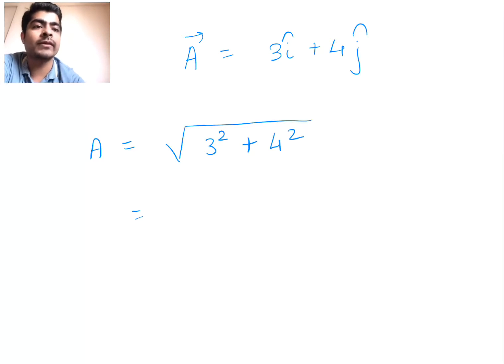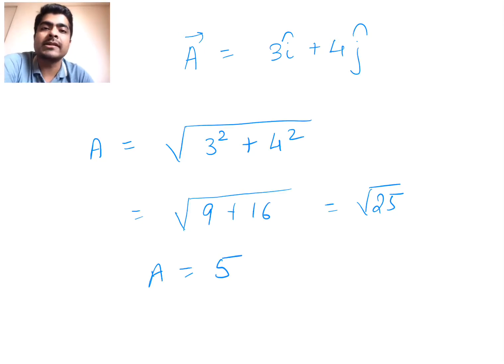So let's take, for example, I have a vector a which is given by 3 i cap plus 4 j cap. You have to write the magnitude of this vector. So it's very easy. A will be under root of x squared plus y squared. So instead of x we have 3, instead of y we have 4, so we get this to be equal to root of 9 plus 16, that will be root of 25. So magnitude of the vector will be 5. Simple.